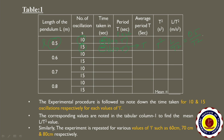The same procedure is repeated for measuring the total time taken for 10 and 15 oscillations for lengths of 0.6, 0.7, and 0.8 meters. Using the same procedure, we find the L/T² values for each length. We take the mean of all these values, which is the mean L/T². The purpose of table 1 is to find this mean L/T², which will be used for calculating the rigidity modulus of the material of the wire.